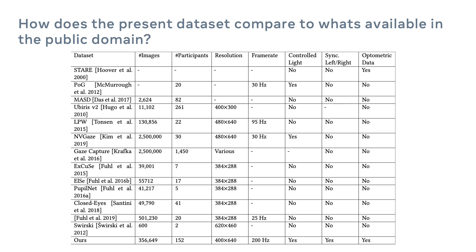The most similar dataset in terms of domain and image specifications is the recently published NVGaze dataset. NVGaze includes annotation masks for key eye regions for an additional 2 million synthetic eye images, but does not provide segmentation annotations for the human eye image set. The LPW dataset includes images recorded from 22 participants wearing a head-mounted camera, from indoor and outdoor recordings with varying light conditions, and is thus very different from the controlled lighting conditions in a VR HMD. Ours is the only dataset collected at 200 Hz under controlled lighting conditions and coupled with an optrometric dataset.